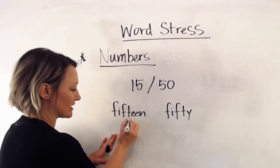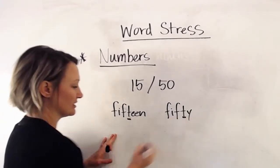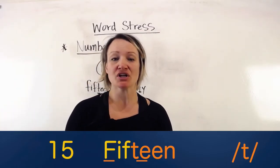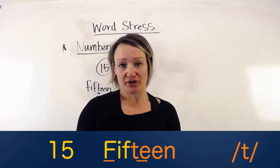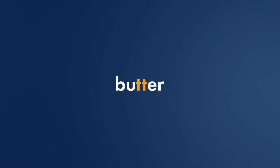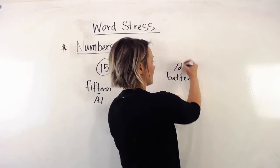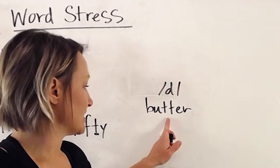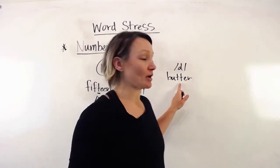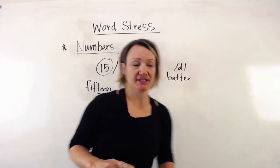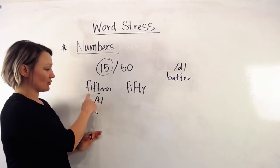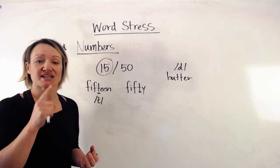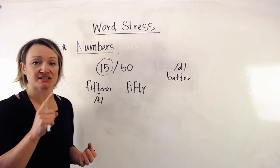First, let's look at the T sound in 15. All of the teens are said with a T sound in the middle, which is not typical for English. For example, the word 'butter' — in American English we say 'butter,' so many times that T in the middle of a word gets pronounced like a D. However, that is not the case here with the teens: 13, 14, 15 — I'm saying a clear T sound.